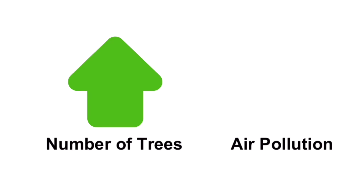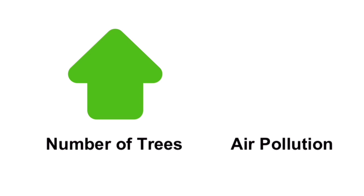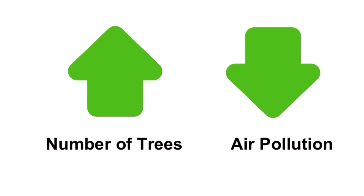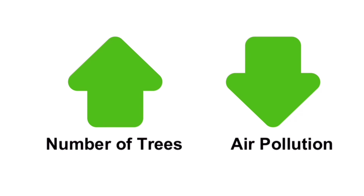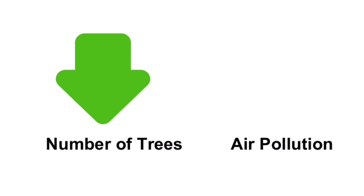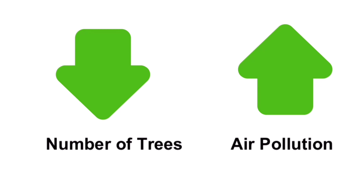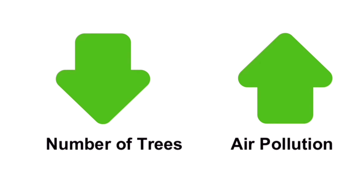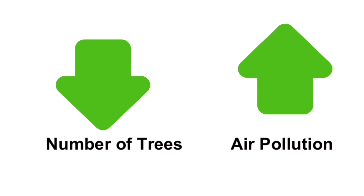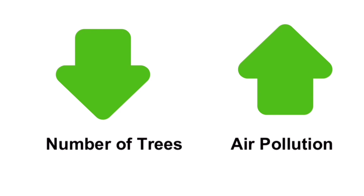Now let's look at another example. Number of trees and air pollution in a given area are inversely proportional to each other, which means that if the area has a greater number of trees, then it has less pollution. On the other hand, if that same area has fewer trees, then it will have a greater probability of air pollution. So again, these two are inversely proportional to each other.